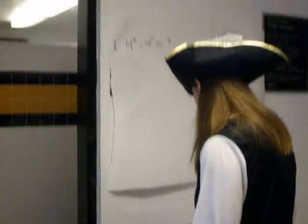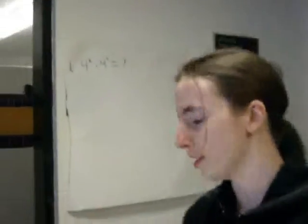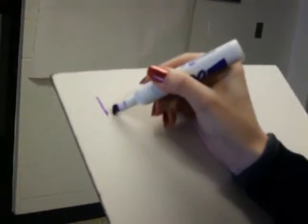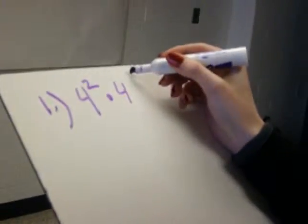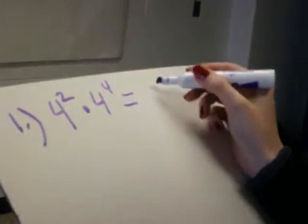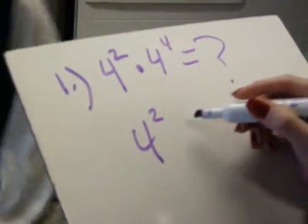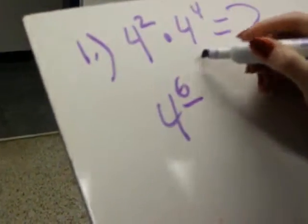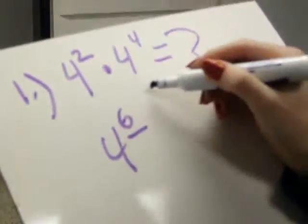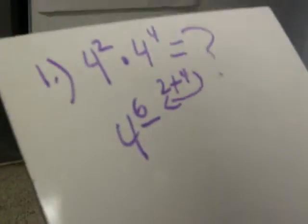And then she can do this. Because base is the same, so 2 plus 4 equals 6. Understand, pirate? Yeah, I think so.